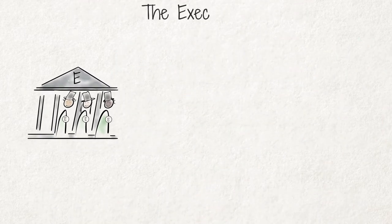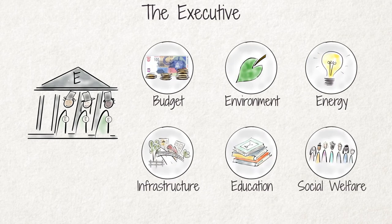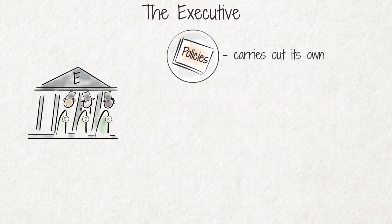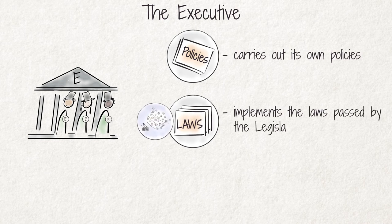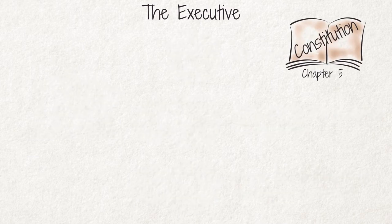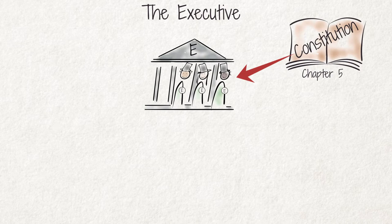The executive branch of government is responsible for the daily administration of a country. That is why we often refer to the executive as the government. It carries out its own policies, implements the laws passed by the legislature, and ensures the decisions of the judiciary are implemented. Chapter 5 of the South African Constitution explains how the executive is formed and how it functions.